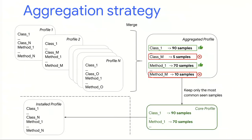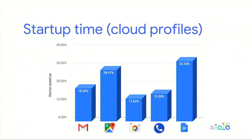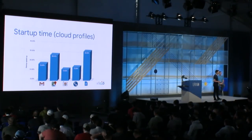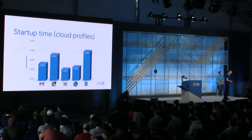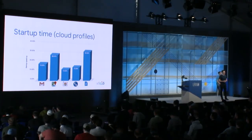How well does this work? We tested across a variety of applications and here are the results. For applications that rely heavily on native code, like Google Camera, you get a startup time improvement of about 12.6% — excellent given the app doesn't have a lot of Java code. For apps that are heavily Java-based, like Google Maps or Google Docs, the optimization improves startup time by about 28% or 33% respectively. Across the board, you can see an average of about 20% improvement, which obviously depends on how much Java code the application uses.